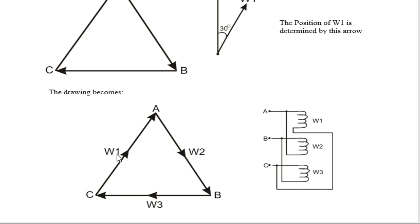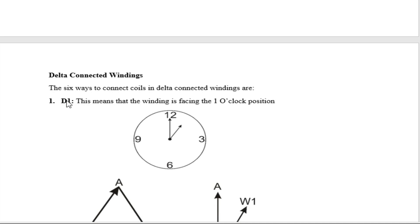Now look at this Delta connection. The polarity side of W1 is connected to core A. The polarity side of W2 is connected to core B. The polarity side of W3 is connected to core C. The non-polarity side of W1 is connected to C. The non-polarity side of W2 is connected to A. The non-polarity side of W3 is connected to B. This is how you draw the vector diagram of a D1 connection.